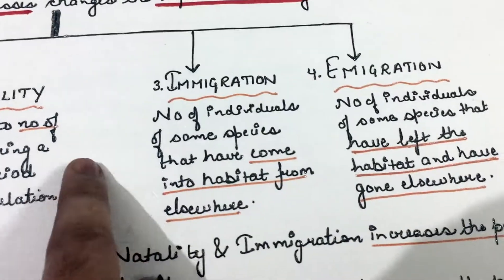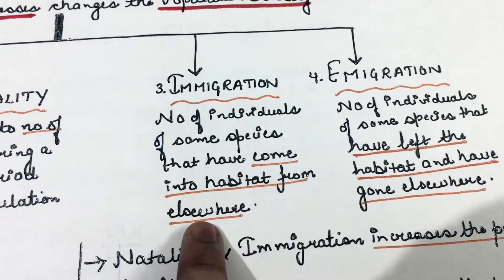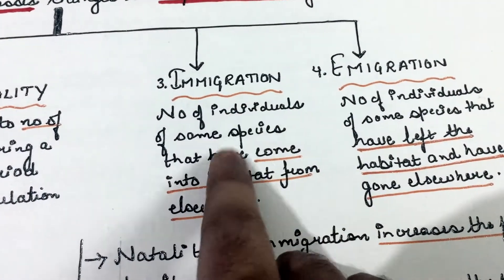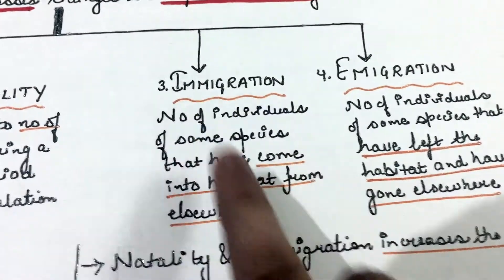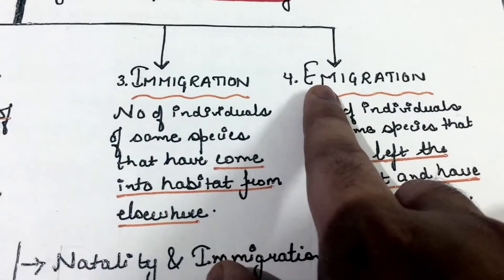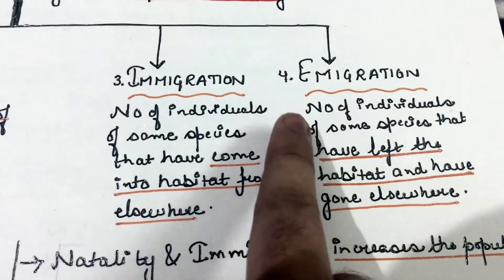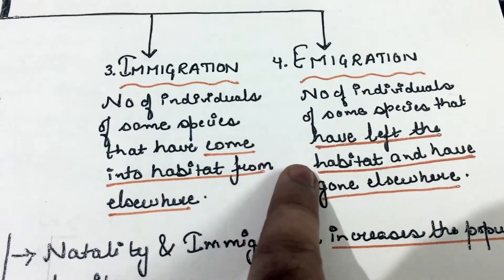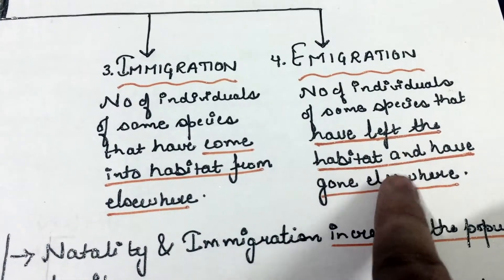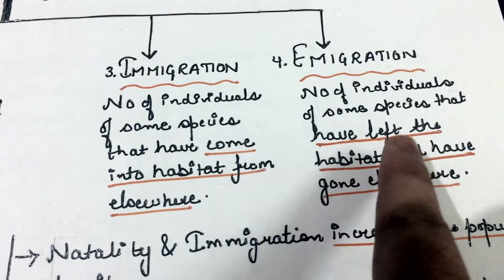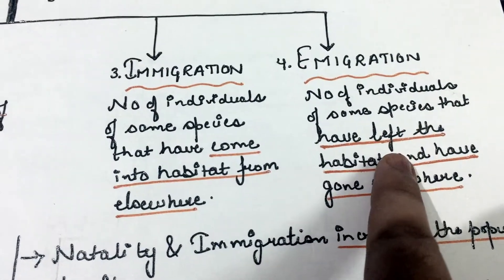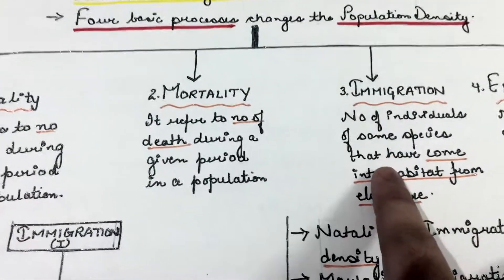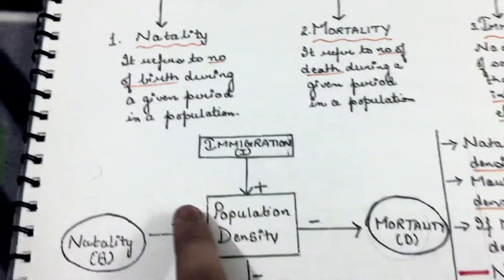The third factor is immigration. Immigration means the number of individuals of the same species that have come into the habitat from elsewhere — that is, the number of individuals entering a habitat. The fourth factor is emigration. Emigration refers to the number of individuals of a species that have left the habitat and gone elsewhere — that is, the number of individuals leaving a habitat.